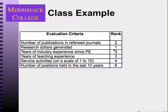The most important criterion in this particular example is research dollars generated, and the least important is apparent stability. The first step in the rating and ranking procedure is to rank these criteria, which are called measures of effectiveness.